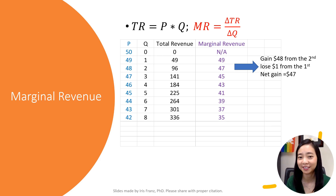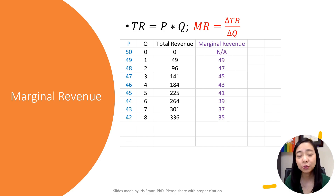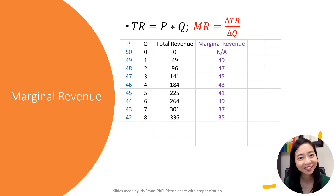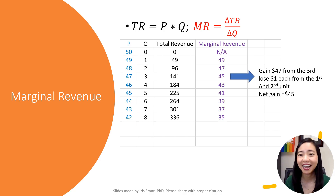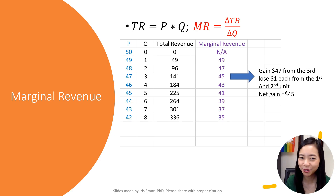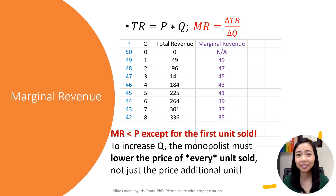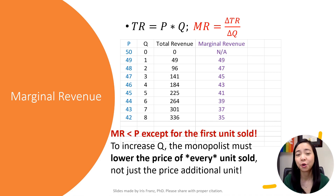Therefore, the marginal revenue of the second unit is only $47. Likewise, when you sell the third unit, you need to lower the price of all units, including the first and the second unit. Although you get an additional $47 from the third unit, you will lose $1 each from the first and the second unit. Therefore, your net gain is $47 minus $2, which is equal to $45. The marginal revenue is lower than the price because the monopolist must lower the price of every unit when it wants to sell more, not just the additional unit.